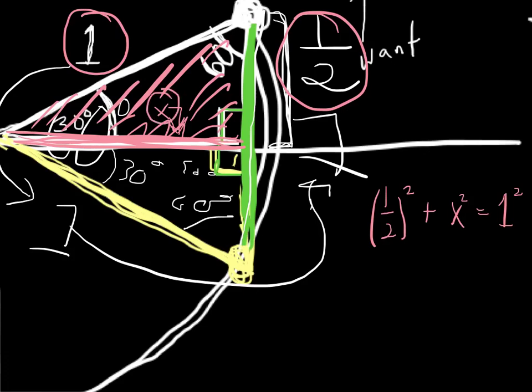So x here. x, 1, and 1 half join forces in a Pythagorean way. So this is like 1 fourth plus x squared equals 1. 1 minus 1 fourth. And rather than spoil it, we'll just leave it to finish. Because we don't want to spoil how it ends.